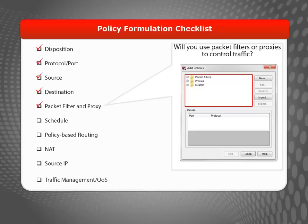Your device uses two categories of policies to filter network traffic: packet filters and proxies. A packet filter examines each packet's IP and TCP/UDP header — if the packet header information is legitimate, then the device allows the packet; otherwise, the device drops the packet. A proxy examines both the header information and the content of each packet to make sure that the connections are secure, which is also called deep packet inspection. If the packet header information is legitimate and the content of the packet is not considered to be a threat, then the device allows the packet; otherwise, it drops it.